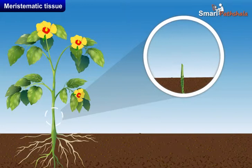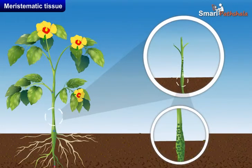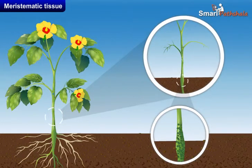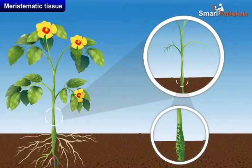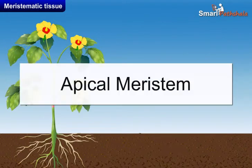Plant tissues in which cells keep on dividing are called meristematic tissue. Meristematic tissues are present in those parts of the plants which keep on growing. They are classified on the basis of their location and are of the following types.